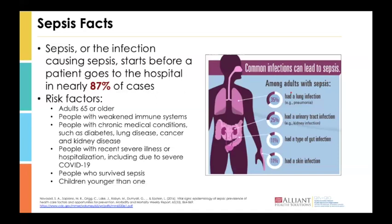Risk factors for sepsis include adults 65 and older, people with weakened immune systems, people with chronic medical conditions such as diabetes, lung disease, cancer, and kidney disease. Also individuals with recent severe illness or hospitalization, including COVID-19 illness, and anybody who has survived sepsis is also at increased risk, as well as children younger than one. The most common infections in adults that lead to sepsis are lung infections, urinary tract infections, infections of the gastrointestinal tract, and skin infections.